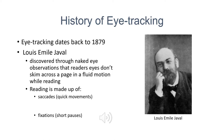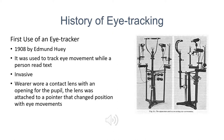The first eye tracker was used by Edmund Huey in 1908. He used this eye tracker to track the eye movement of people while they read text. This eye tracker was invasive, unlike most modern eye trackers, and required the wearer to wear a contact lens that had an opening for the pupil and was attached to a pointer that changed position with the wearer's eye movements.